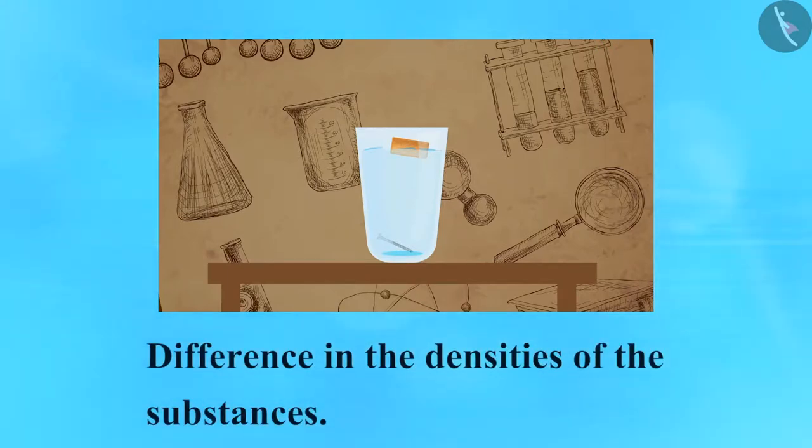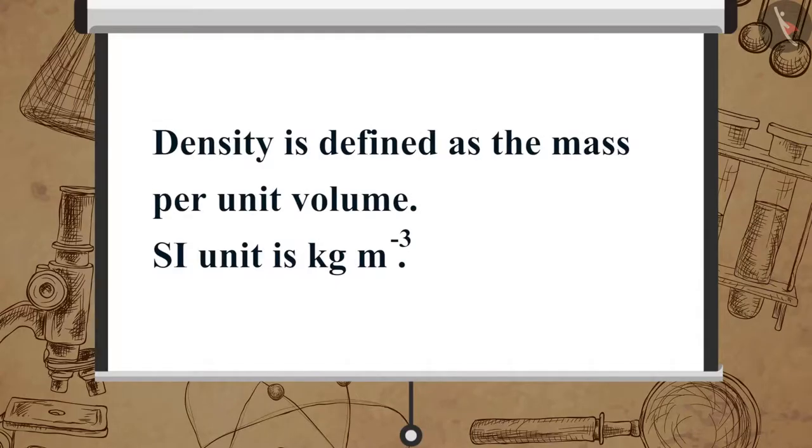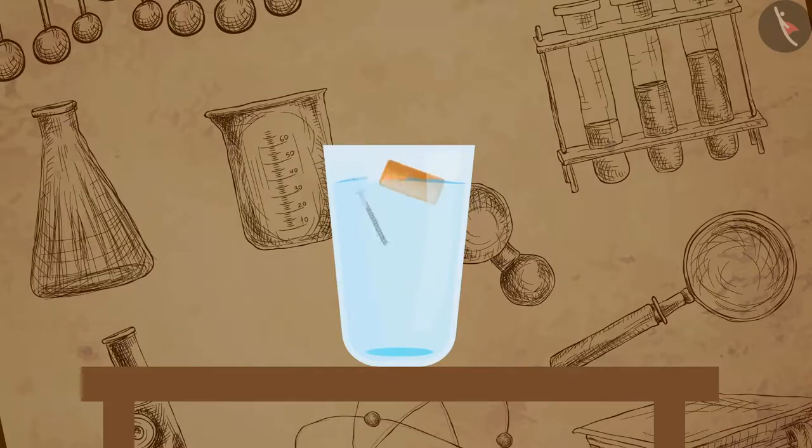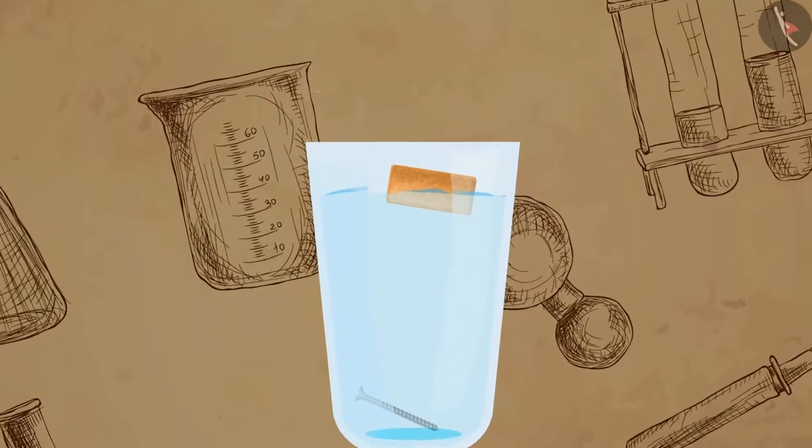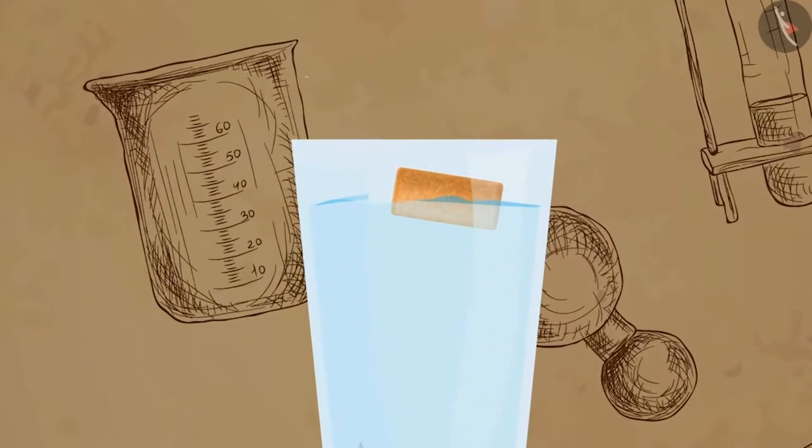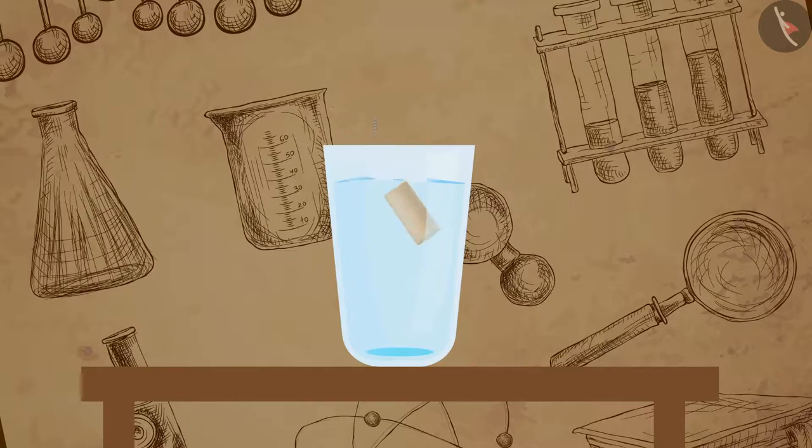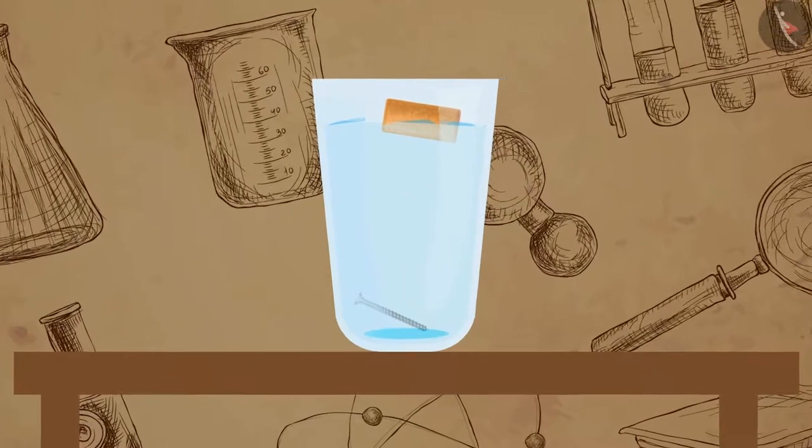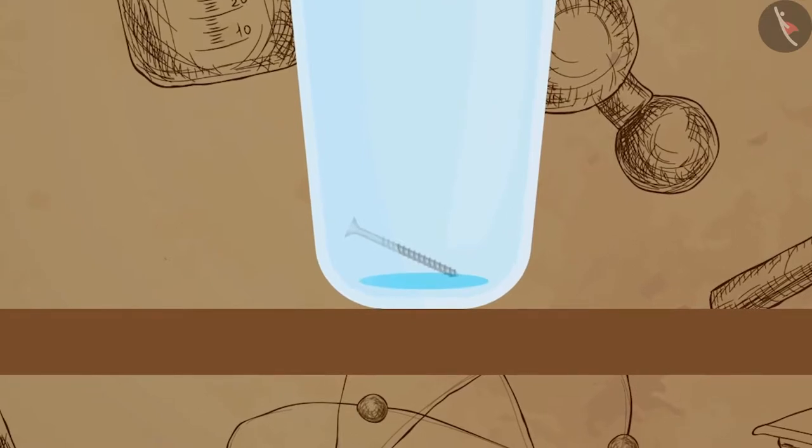It is because of the difference in the densities of the substances. Density is defined as the mass per unit volume. Its unit is kilogram per meter cube. The cork floats as its density is less than that of water. It means the upthrust on cork is greater than the weight of the cork. While the nail sinks as its density is more than that of water. It means the upthrust on the nail is lesser than the weight of the nail.